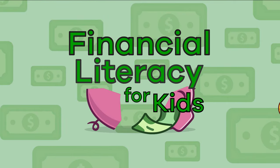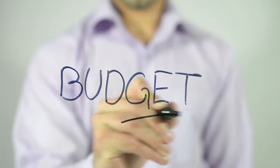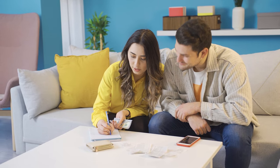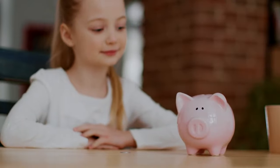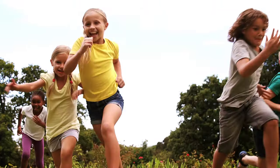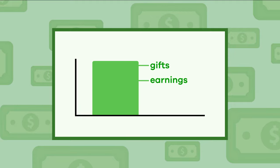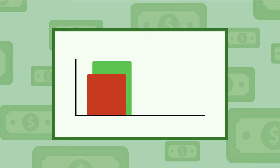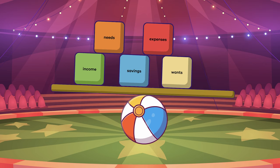Financial literacy for kids, part 2: making a budget. Do you know what the word budget means? Do you know why and how budgets are used? Budgeting is a skill that can help you learn how to save for something you want to buy and help you become more financially literate. Ready to get started? Let's go! A budget is a spending plan based on income and expenses. In other words, a budget estimates how much money you earn, receive as gifts, and spend over time — typically by month or by year.